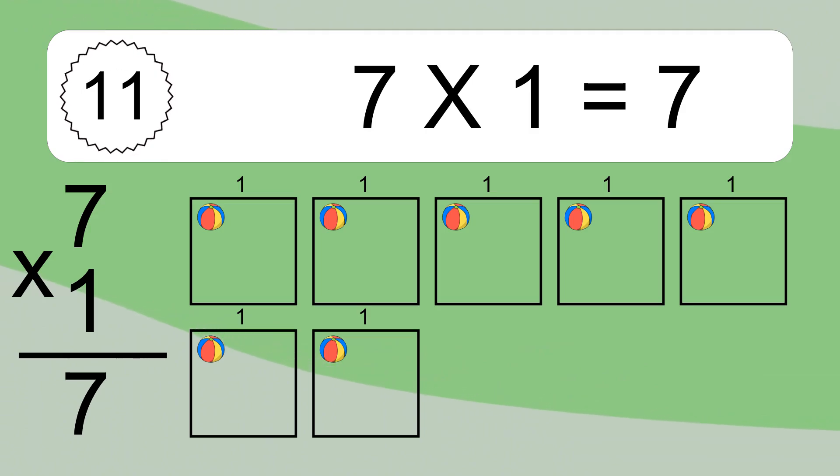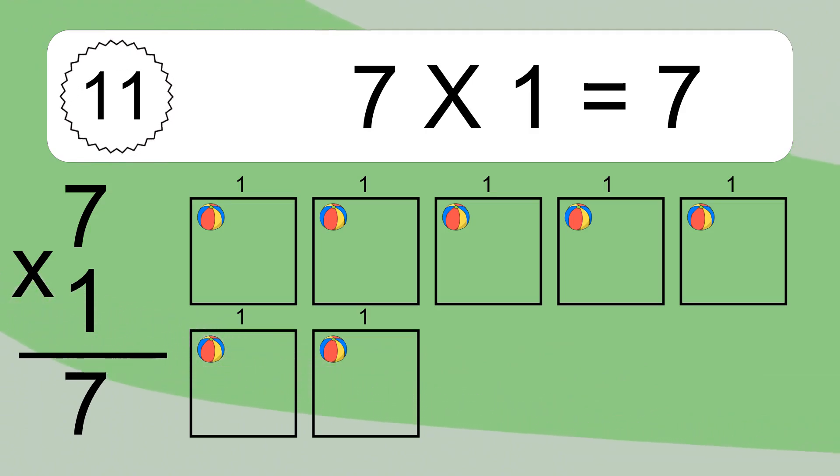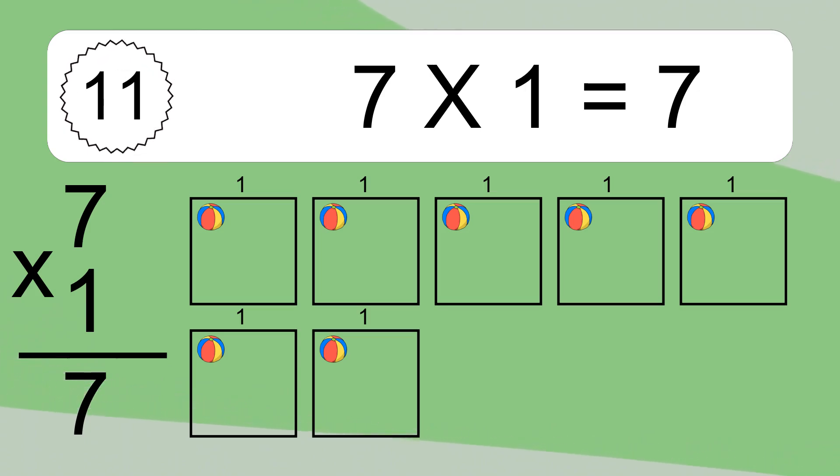We have 7 boxes, and each box has 1 colorful ball inside. If you count all the balls in all the boxes together, you will have 7 times 1 balls. This equals 7 balls.